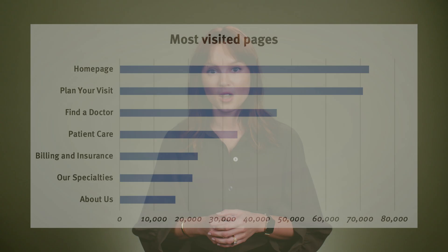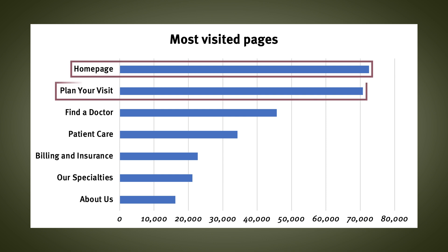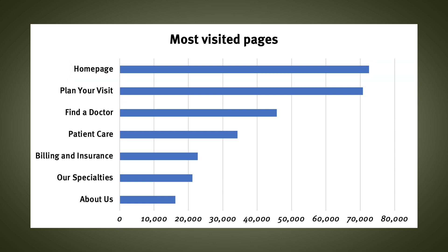Let's imagine that we want to show the seven most visited pages for a hospital website. We might decide to keep the axis and the gridlines in place if we simply want to give our viewer a sense of the scale of the differences between those pages. With gridlines and no data labels, viewers can still see that the homepage and the plan-your-visit page are much more heavily visited than the others. Viewers won't know the exact numbers, but that wasn't our goal in this case anyway.